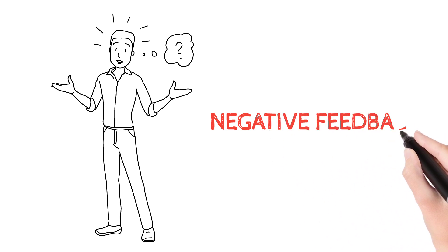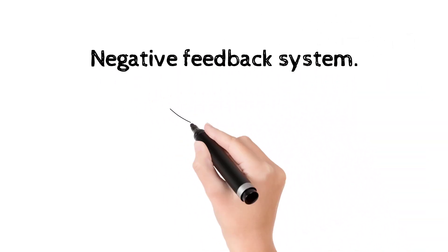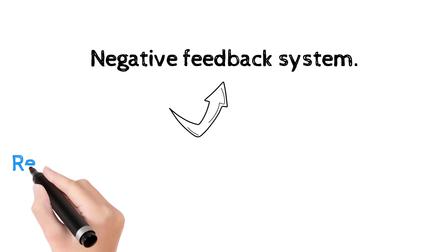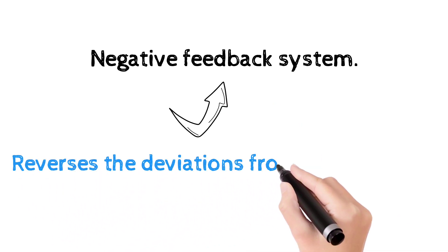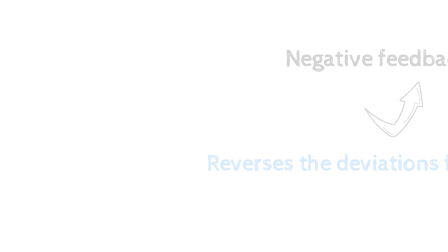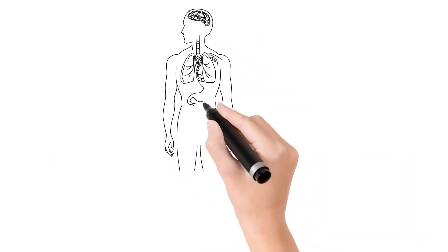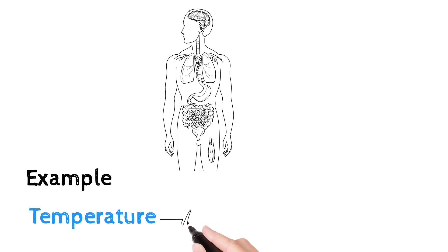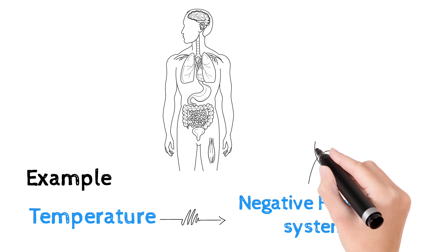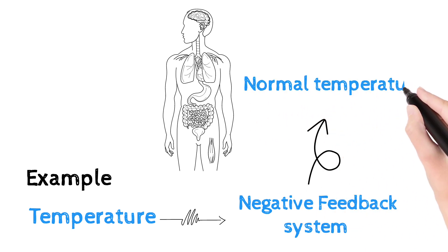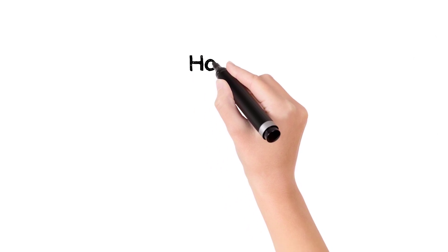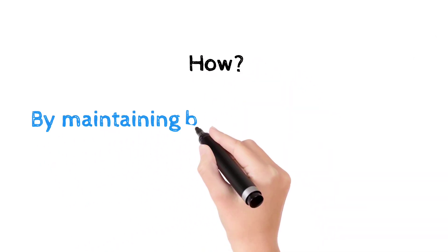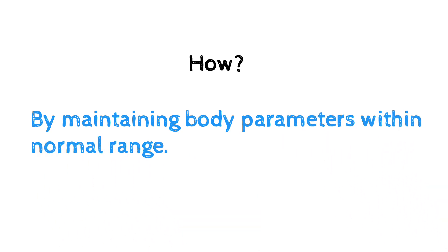By using a negative feedback mechanism or negative feedback system. The negative feedback system reverses a deviation from the set point. For example, if the temperature varies, the negative feedback system will reverse that variation to maintain the body parameters within the normal range.